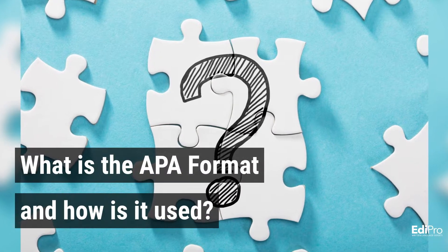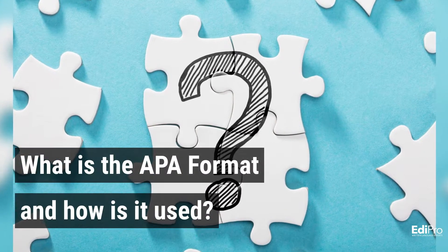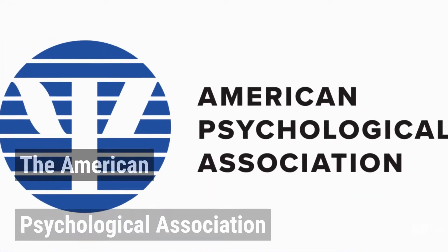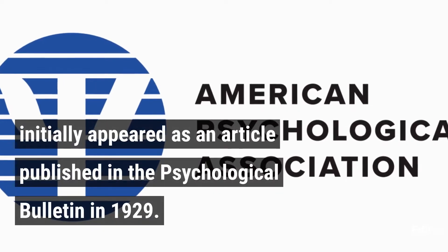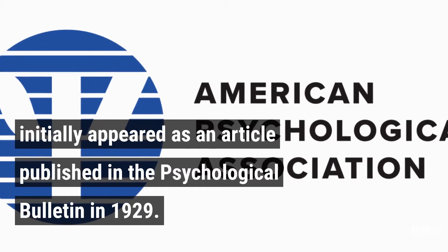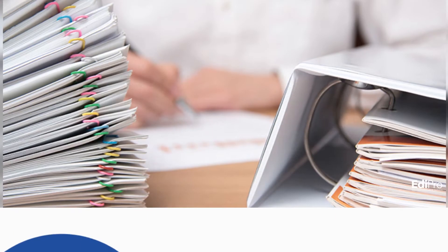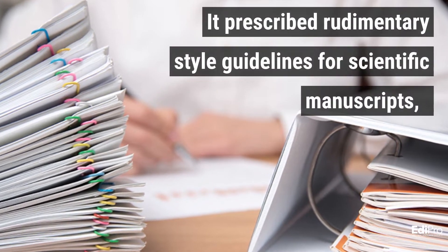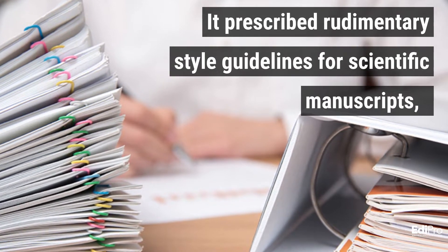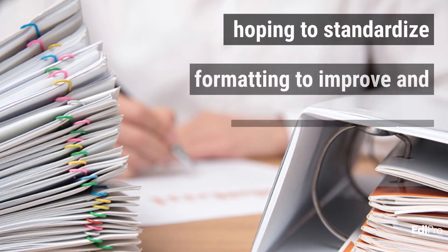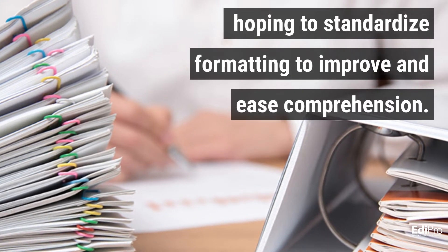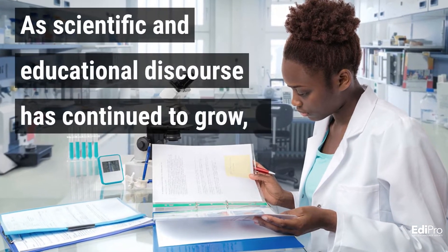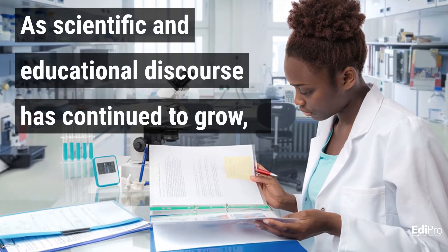What is the APA format and how is it used? The American Psychological Association initially appeared as an article published in the Psychological Bulletin in 1929. It prescribed rudimentary style guidelines for scientific manuscripts, hoping to standardize formatting to improve and ease comprehension. As scientific and educational discourse has continued to grow,